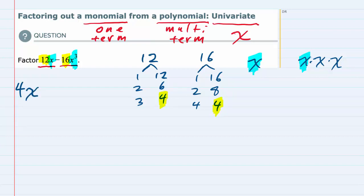Having looked at both the coefficients and the variables, both of these terms have a 4 in common and they have an x in common. So this tells me I'm factoring out a 4x, which by the way is our monomial—it's a single term that we're factoring out.